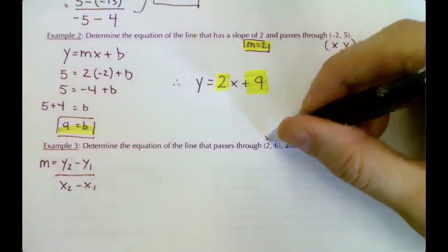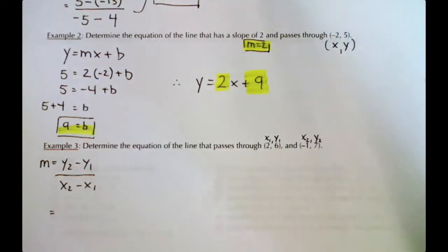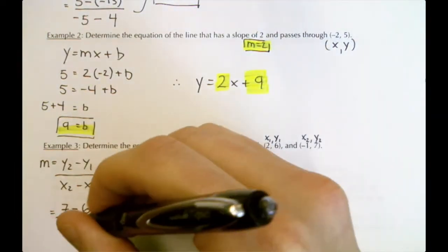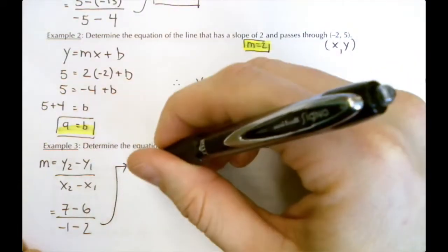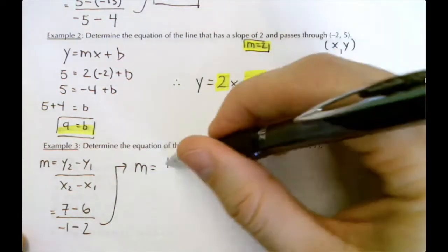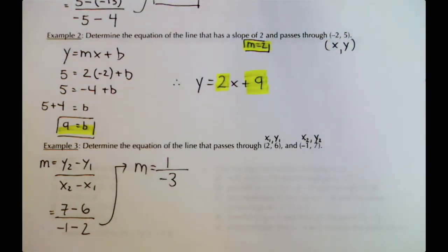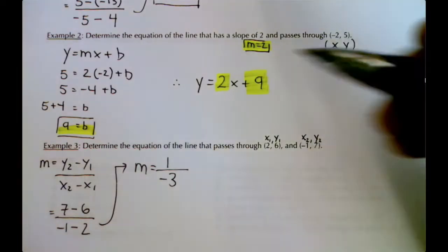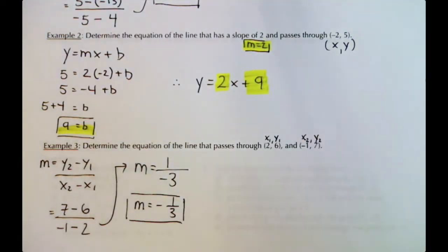In Example 3 we have two points. There's x1, y1 and x2, y2. Plugging into the slope formula: y2 minus y1 is 7 minus 6, over x2 minus x1 which is -1 minus 2. That gives 1 over -3. We won't convert to a decimal since it doesn't terminate nicely. Moving the negative sign in front of the fraction, we get m = -1/3.